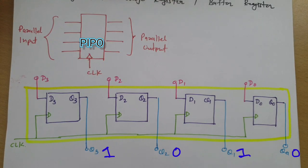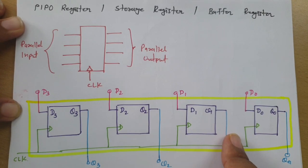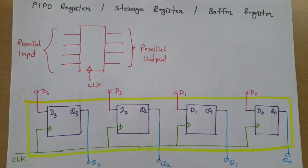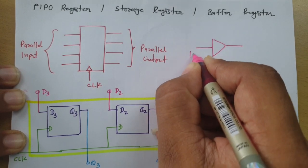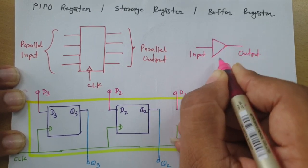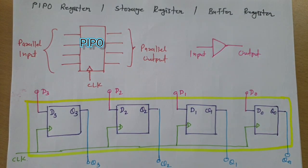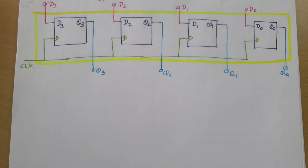For example, if D3 D2 D1 D0 is 1010, after one clock that 1010 will appear at Q3 Q2 Q1 Q0. This is what we call a storage register — we just need one clock for that. It is also referred to as a buffer register, since the output is similar to the input once we give the clock signal.